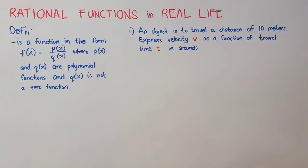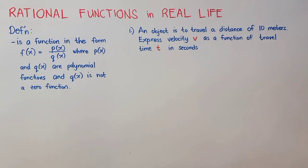Before we begin, let us first define rational functions. It is a function in the form f(x) equals p(x) over q(x), where p(x) and q(x) are polynomial functions, and q(x) is not a zero function. If you could still recall, polynomial function is a function with non-negative or positive integer exponents.